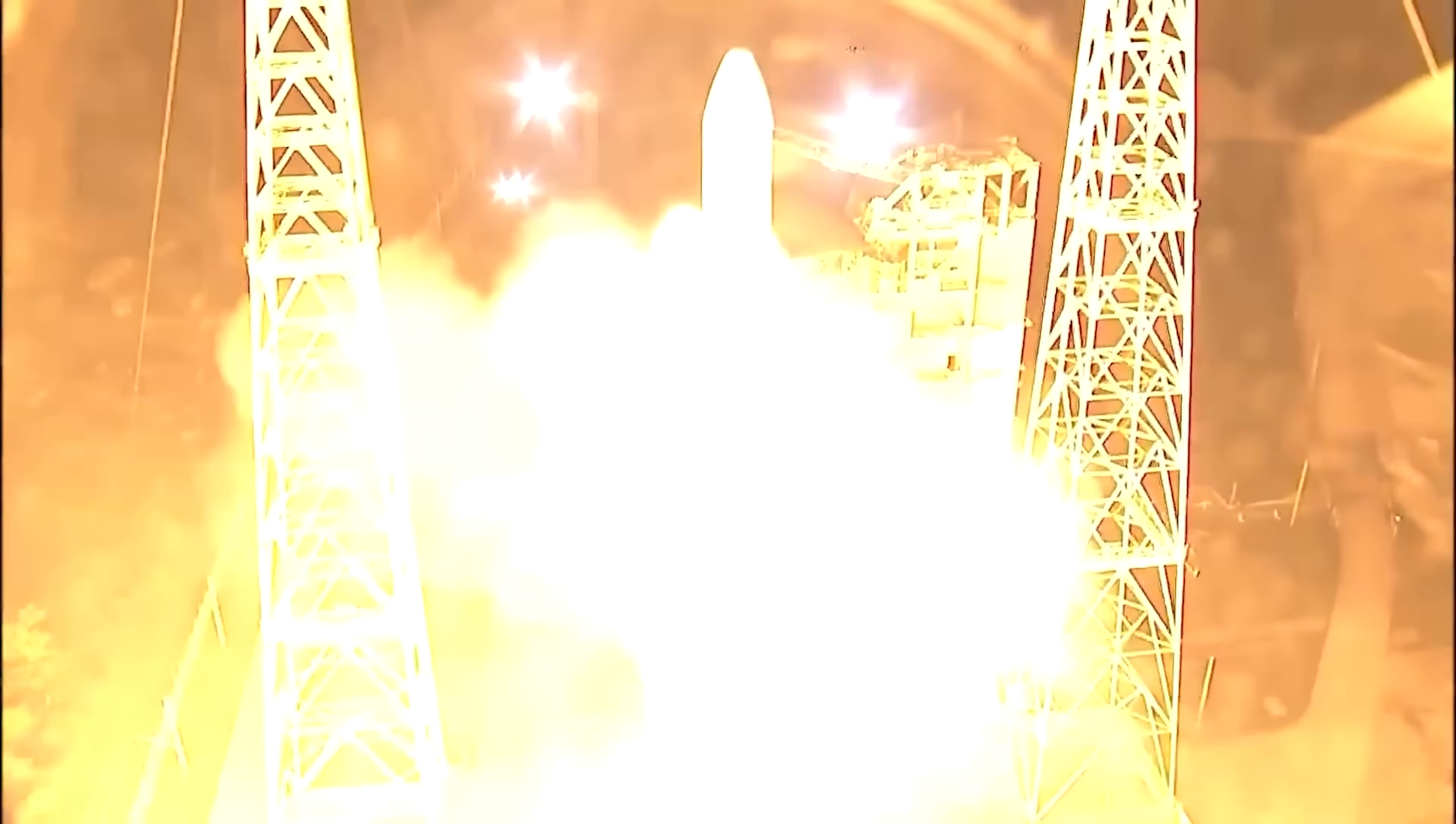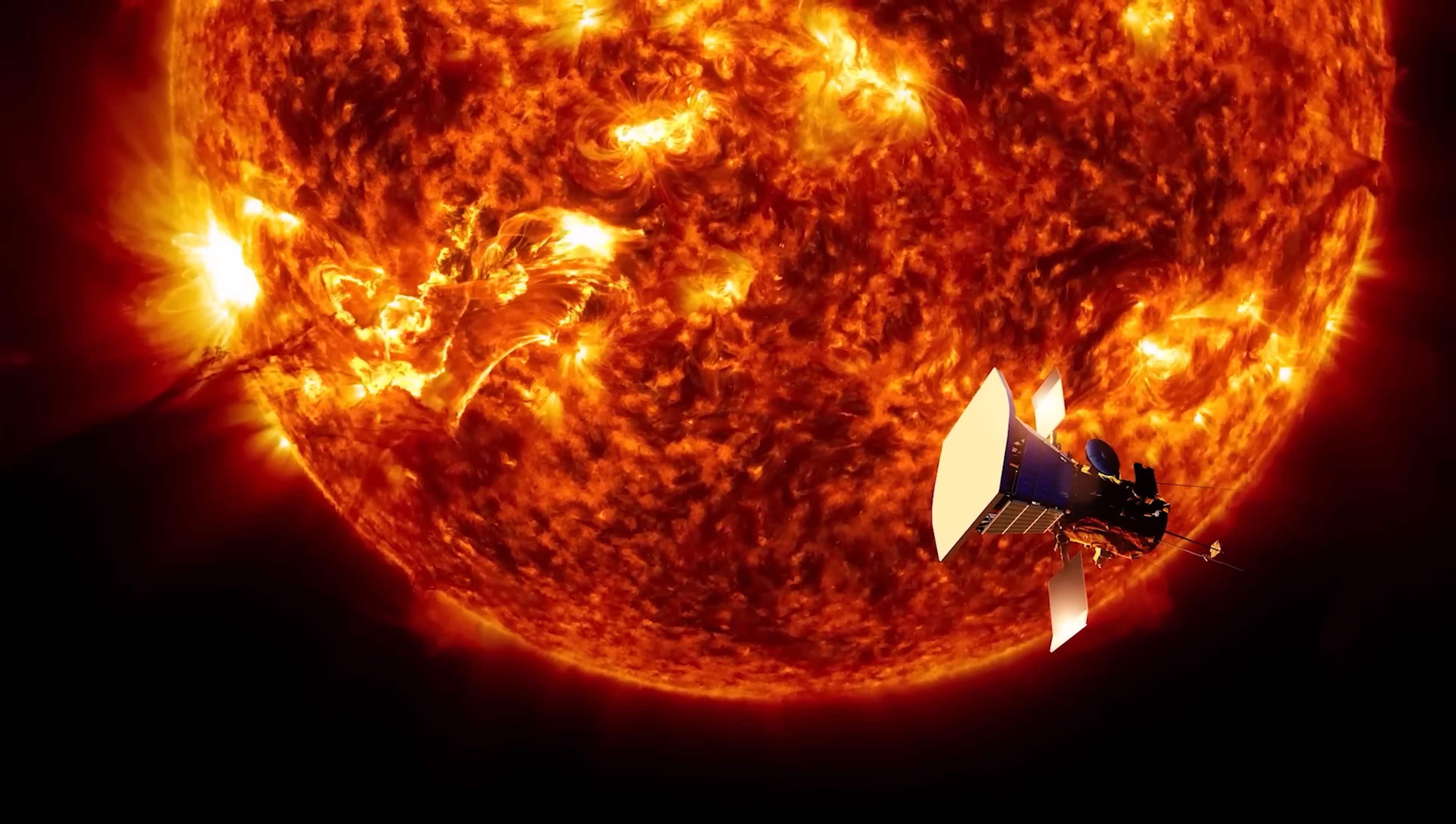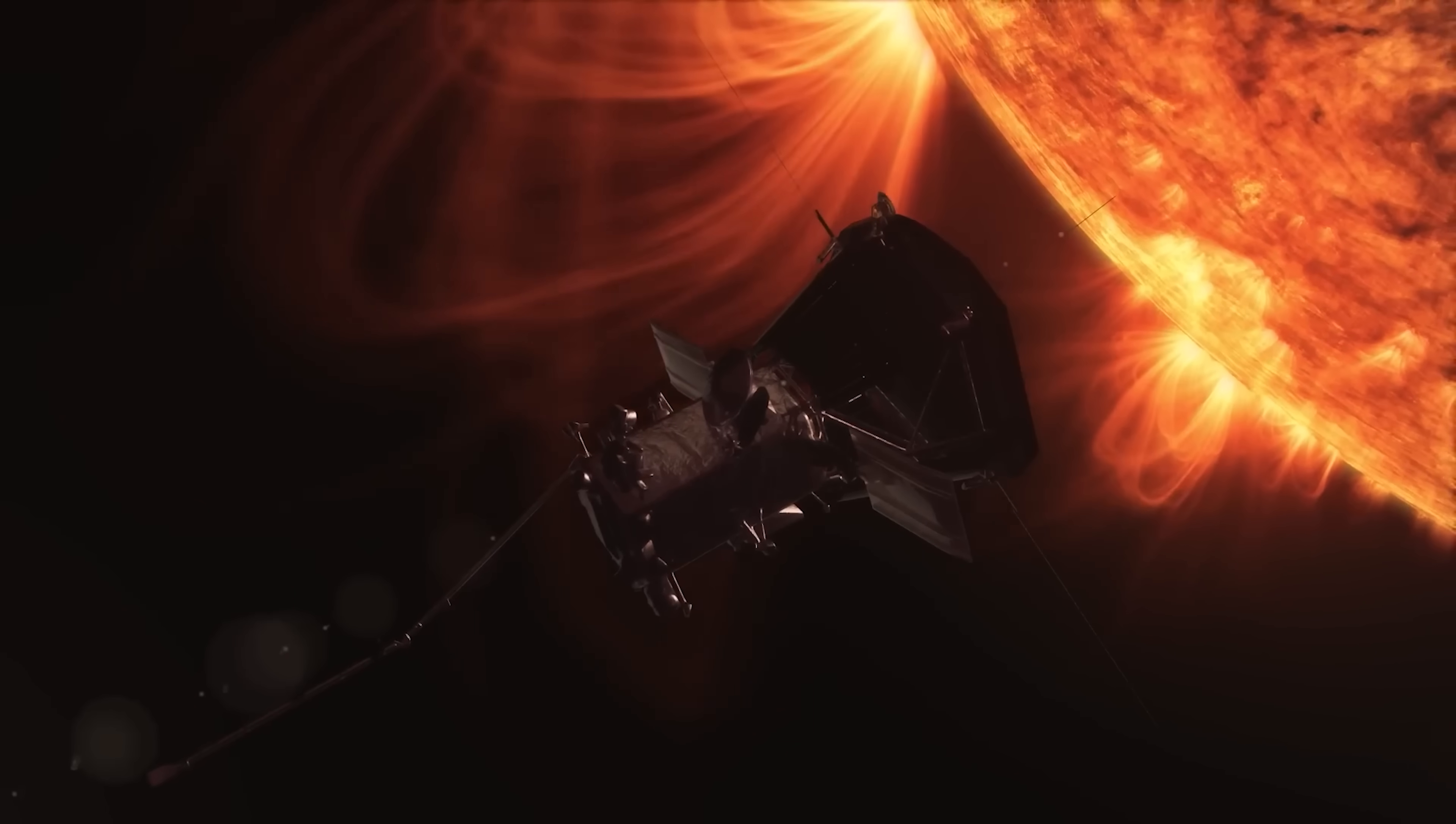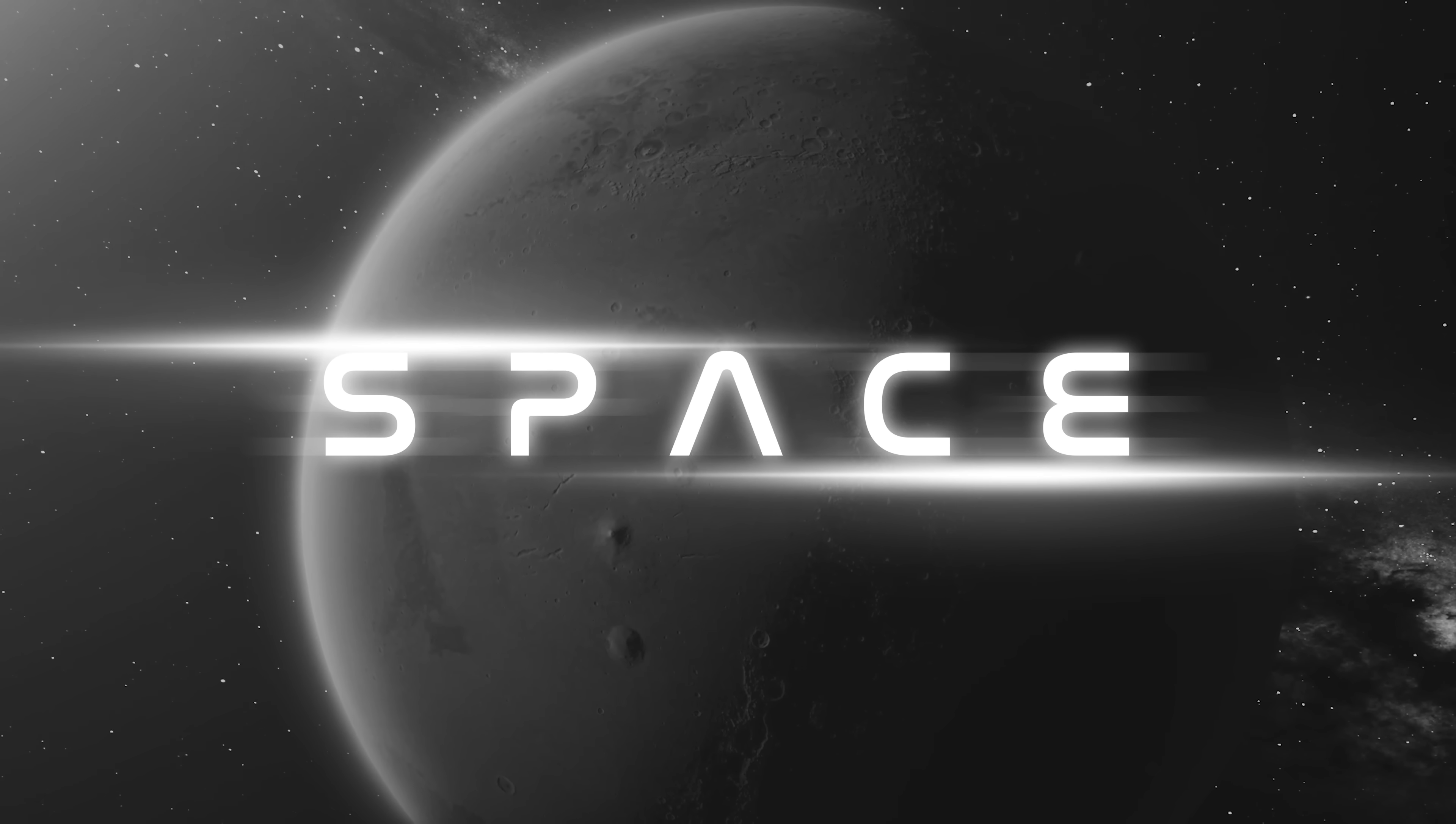The Parker Solar Probe flew closer to the Sun than any spacecraft in history, literally touching the Sun's outer atmosphere and living to tell the tale. This isn't just a space flex, it's changing everything we know about our solar system's fiery heart. From surviving million-degree heat to surfing solar winds, this mission is rewriting the rulebook. Let's break down how NASA pulled off one of the boldest space stunts of all time.